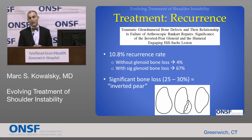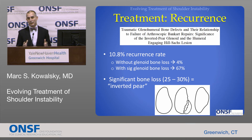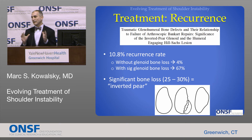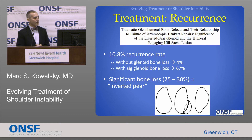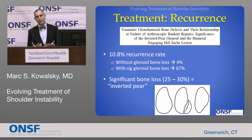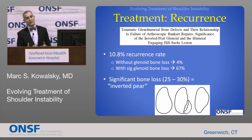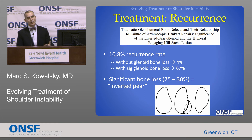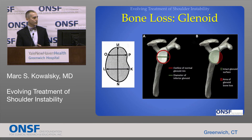The group with bone loss had a recurrence rate as high as 67%, which is obviously unacceptable. He estimated bone loss by understanding that the socket is usually pear-shaped — wider at the base, more narrow at the top. He described what we call the inverted pear, when the socket narrows at the bottom as a result of bone loss. That was estimated to represent about 25% to 30% bone loss, and those are the patients susceptible to recurrence even after a well-done soft tissue repair.